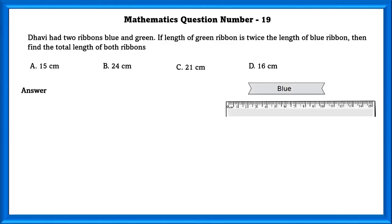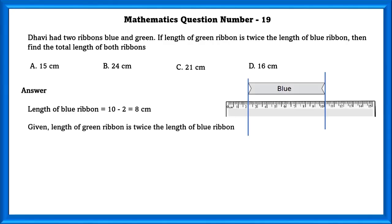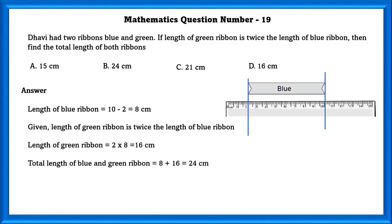Mathematics question number 19. Davi has two ribbons, blue and green. The length of the green ribbon is twice the length of the blue ribbon. Length of blue ribbon equals 8 cm. Length of green ribbon equals 2 × 8 equals 16 cm. The total length of both ribbons equals 24 cm.